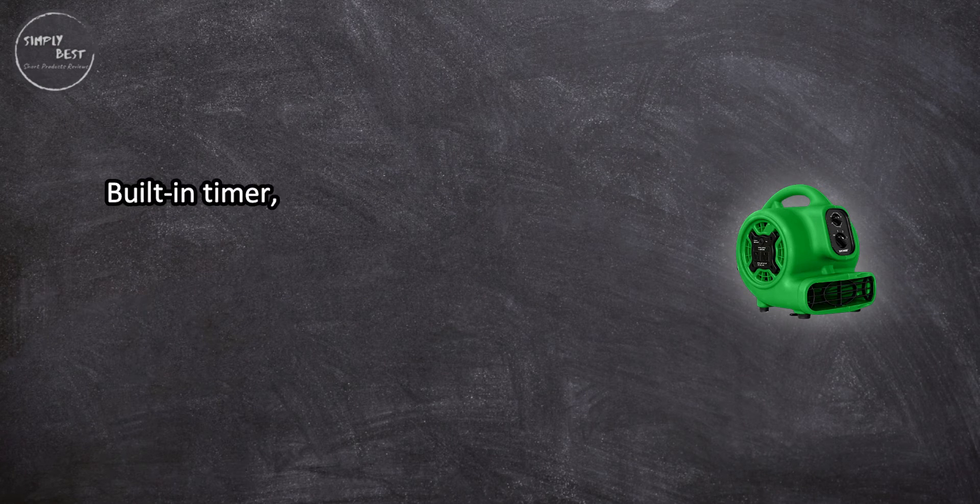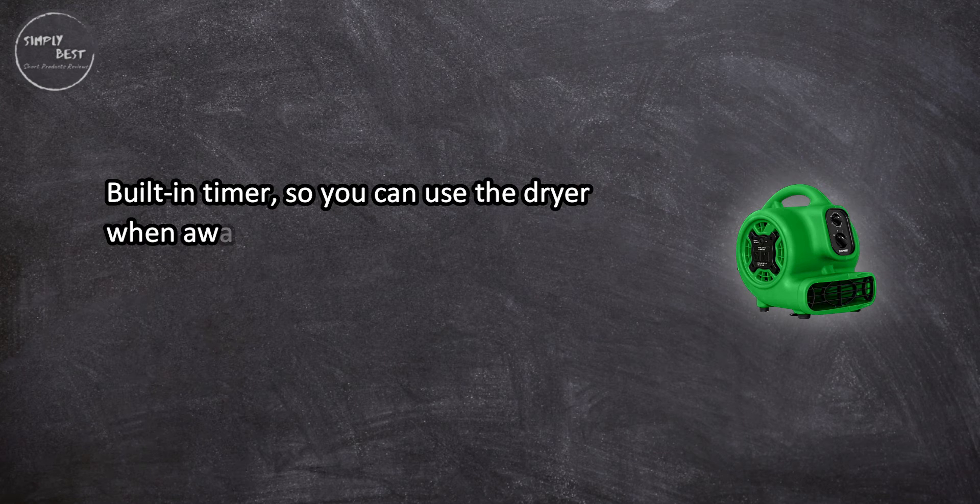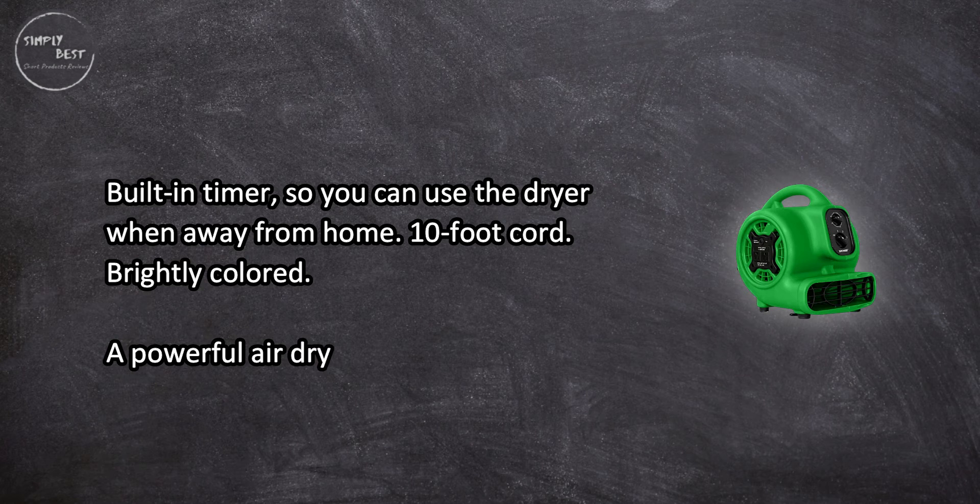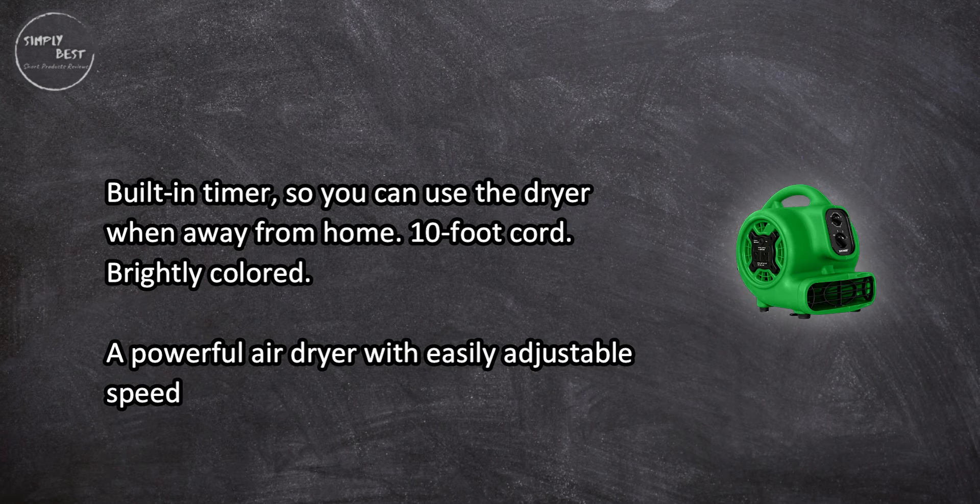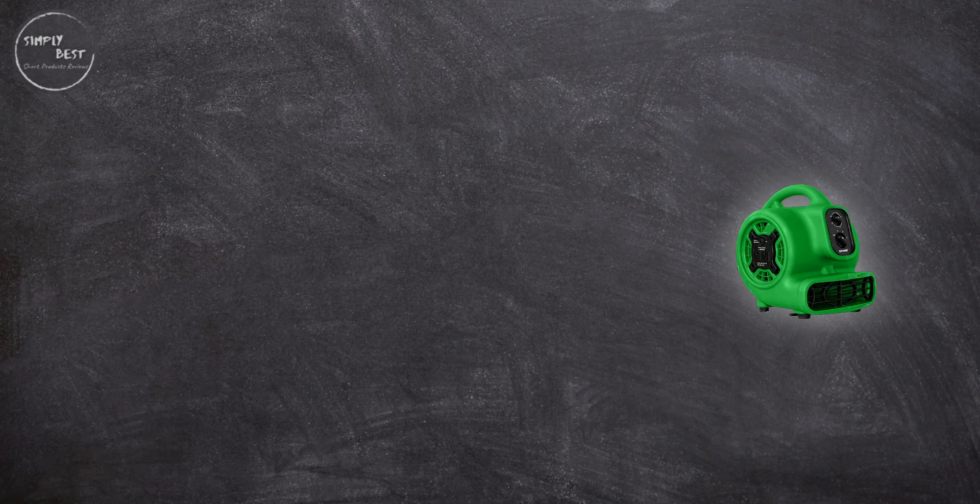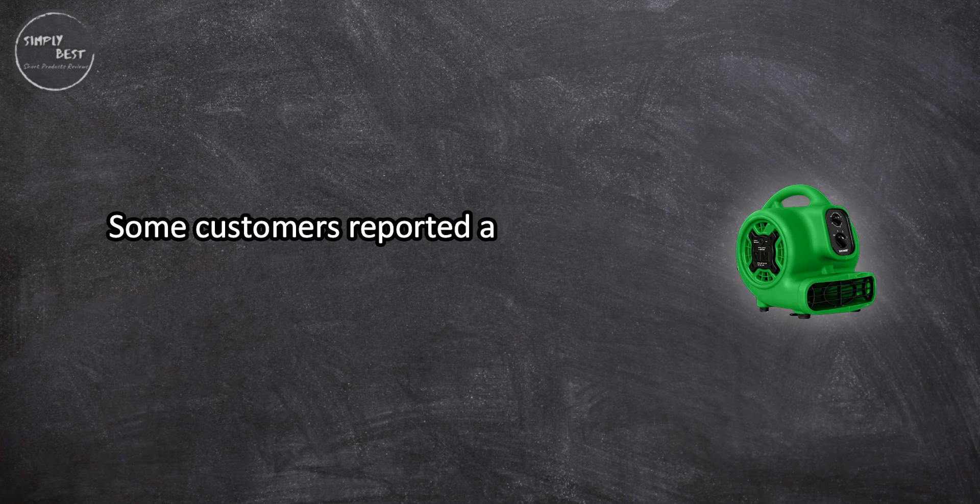Built-in timer so you can use the dryer when away from home. 10 foot cord, brightly colored. A powerful air dryer with easily adjustable speed and angle to get the job done quickly. Some customers reported a short lifespan.